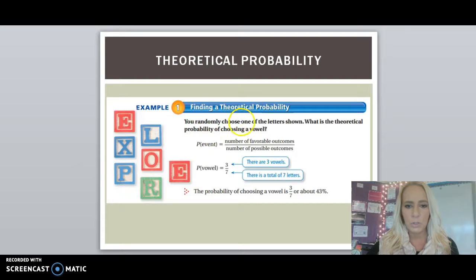You randomly choose one of the letters shown. What is the theoretical probability of choosing a vowel? So a vowel is A, E, I, O, U. So looking at these blocks, I have an E, which is a vowel, an O, which is a vowel, and another E, which is also a vowel. So the number of favorable outcomes is three because there are three vowels. The number of possible outcomes is seven because there are seven total letters. The probability of choosing a vowel is three out of seven or about 43%.